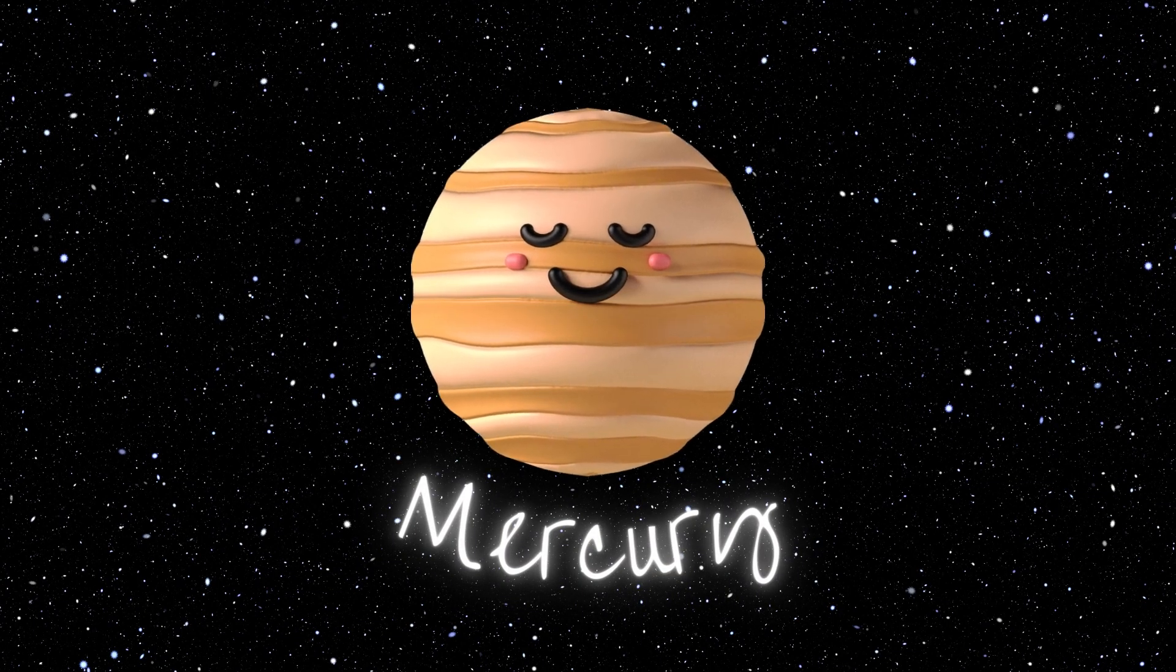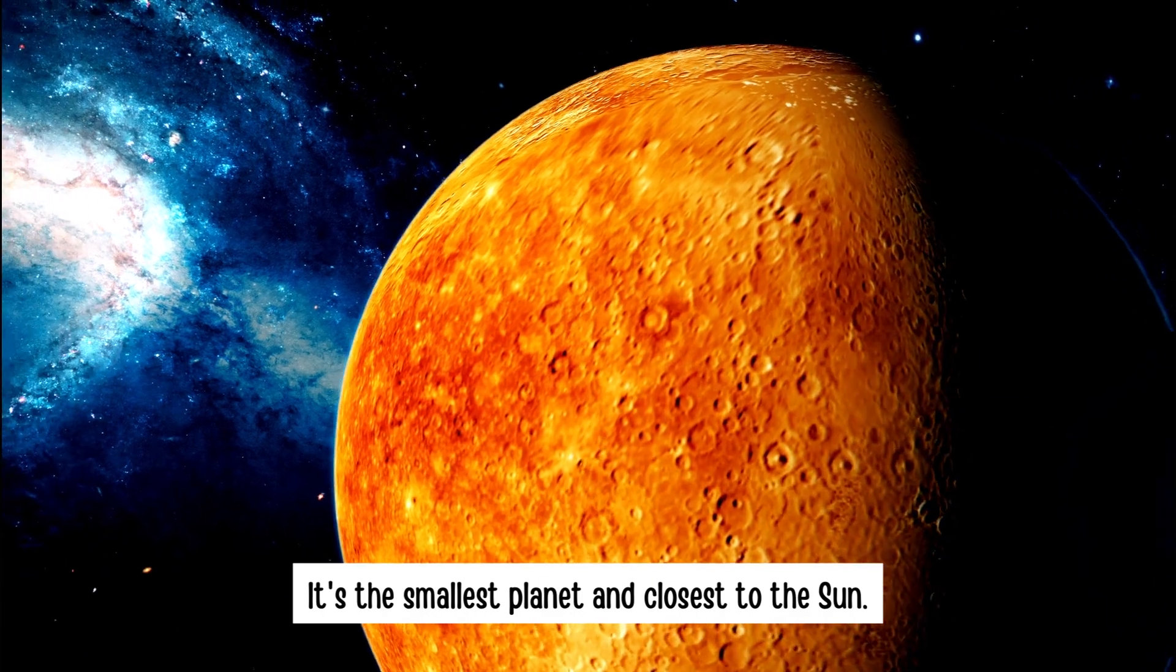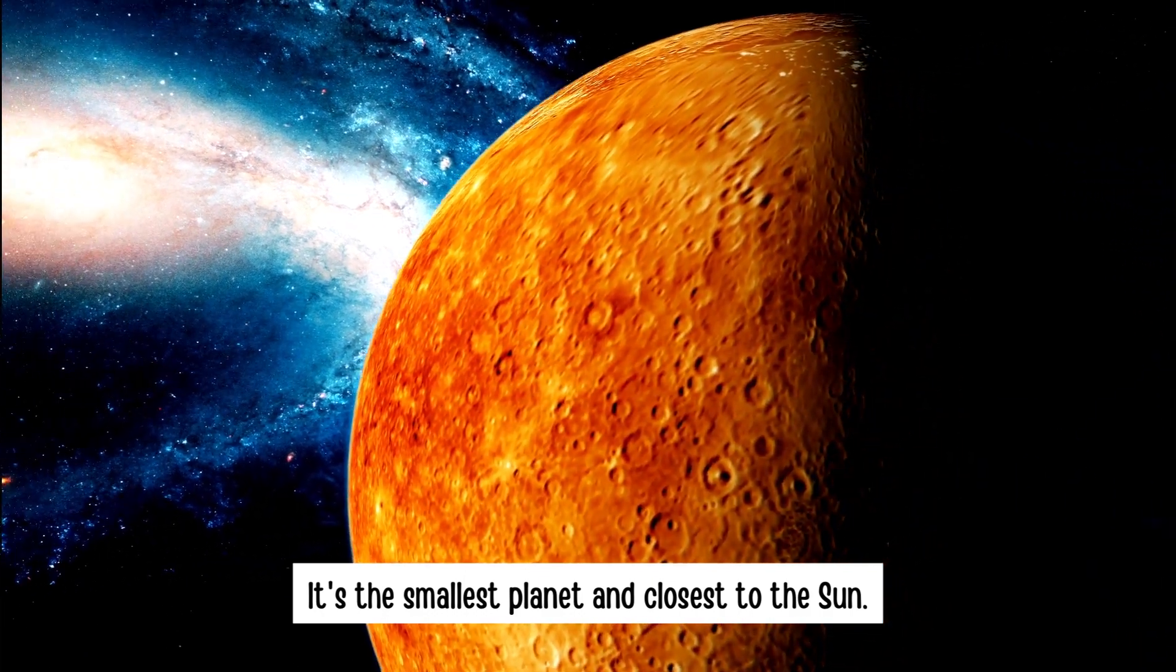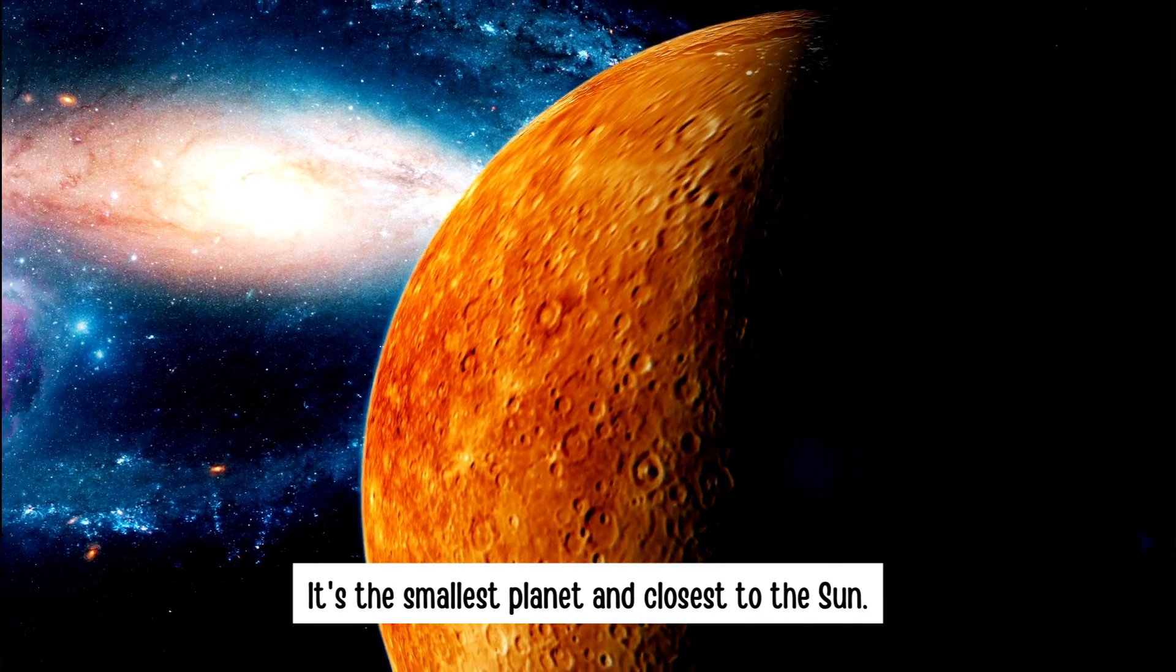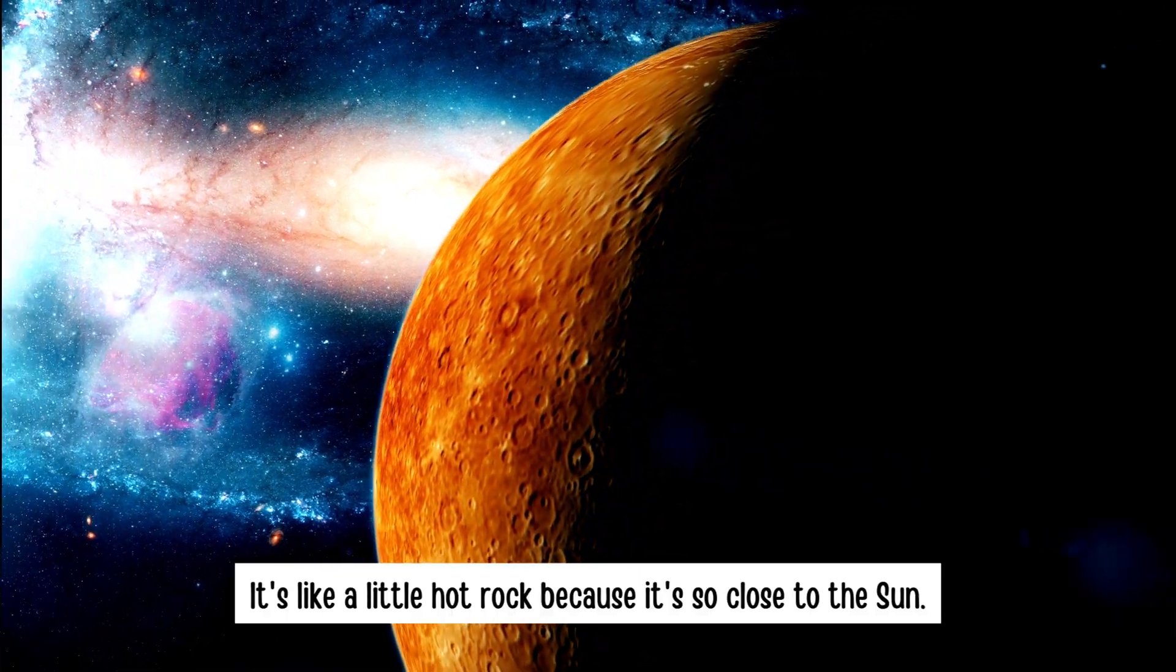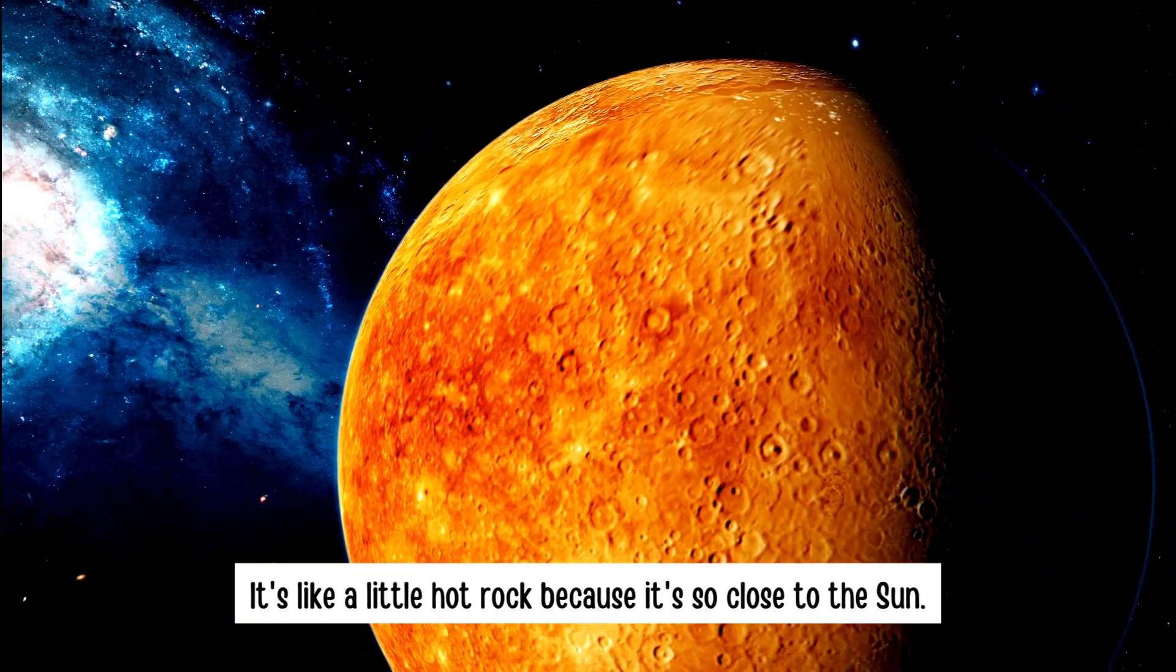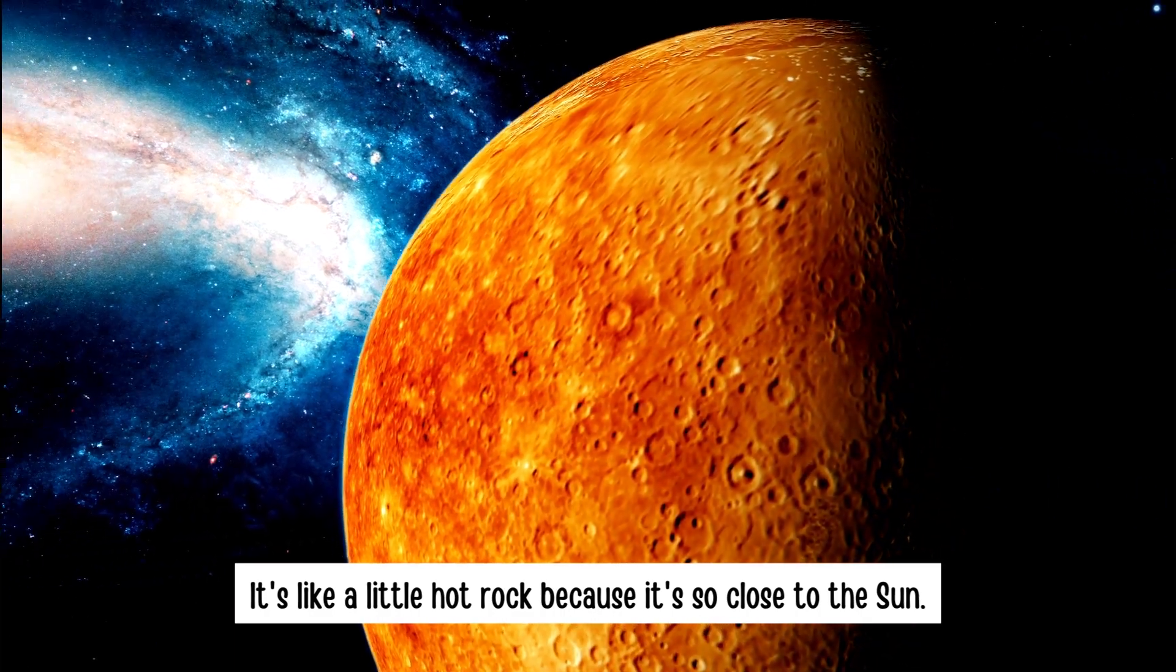Mercury. It's the smallest planet and closest to the sun. It's like a little hot rock because it's so close to the sun.